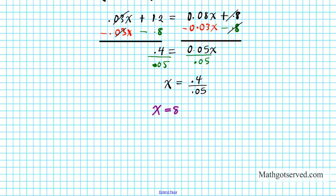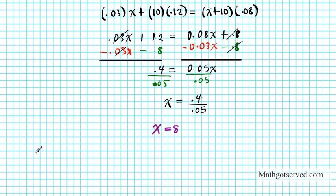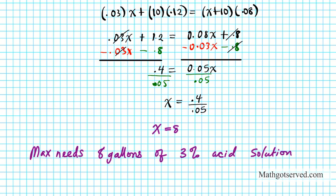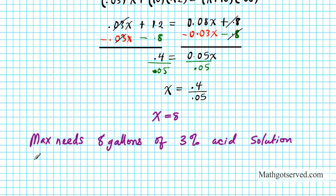What does this answer mean? It means that the desired amount we need is 8 gallons of 3% acid solution. So Max needs 8 gallons of 3% acid solution to get an 8% acid solution. It means 8 gallons of 3% acid solution to obtain an 8% acid solution.